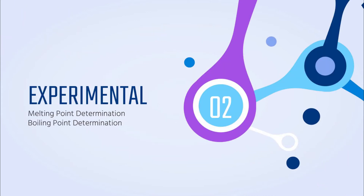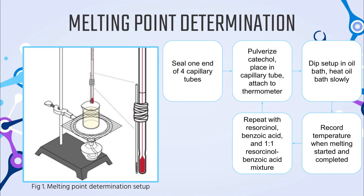For the melting point determination method, a capillary tube with a 1 mm diameter and 6 cm length was prepared and one end was melted in an open flame to seal it. A pinch of catechol was pulverized using a completely dried mortar and pestle. The powder was introduced into the capillary tube by pushing the open end into the powder and tapping the closed end on the tabletop, occupying a height of about 1 cm. A rubber band attached the capillary tube to the bulb end of a thermometer, and the setup was dipped in an oil bath, slowly heated while gently stirring. The temperatures when the sample first started to liquefy and when all solids disappeared were recorded, and the melting point was reported as a range.